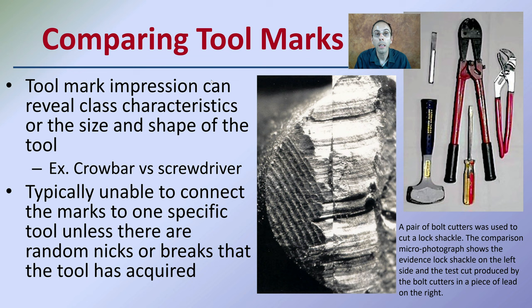We look here at a pair of bolt cutters that were used to cut a locked shackle. The comparison micro photograph shows the locked shackle on the left side and the test cut produced by the bolt cutters on a piece of lead on the right. You can see a pretty close match on many of those ridges and valleys.